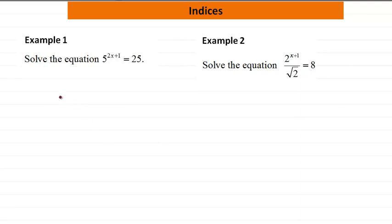Example 1. We have 5 to the power 2x plus 1, equal to 25. We can write both sides with the same base number. 5 to the power 2x plus 1, and 25 we can write as 5 squared.